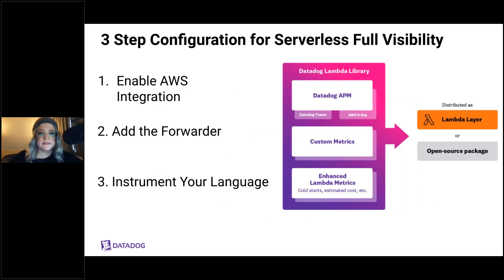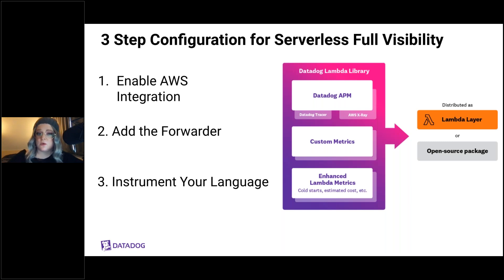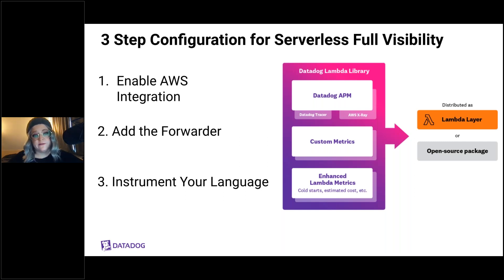So how are we going to see that our serverless functions are working as intended? Datadog makes it really easy. The first part is enabling the AWS integration, which sets up IAM roles and begins scraping your AWS account for information. Then we add the forwarder, which ships all metrics for serverless back to Datadog. Finally we instrument it with our programming language of choice.